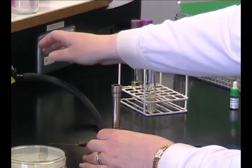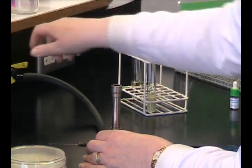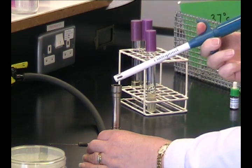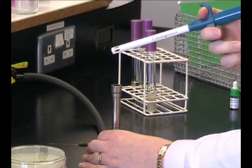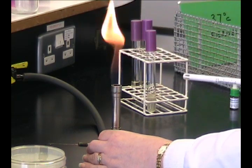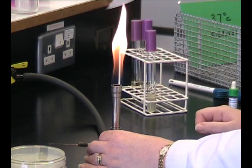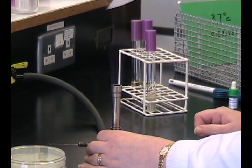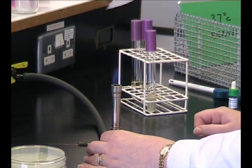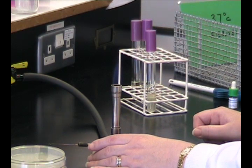The first thing to do is to light your Bunsen burner. Turn on the gas, make sure the air hole is closed and use the gas lighter provided to light the gas. When the air hole is closed, the gas and the flame will be cold and yellow. When you want to use it, open the air hole up and you'll get a nice bright blue cone of gas.